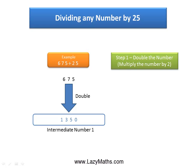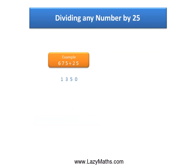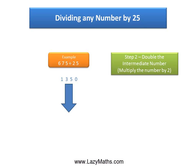We call this intermediate number 1. The next step is to take 1350 and double it one more time, and we get 2700 as the double of 1350.